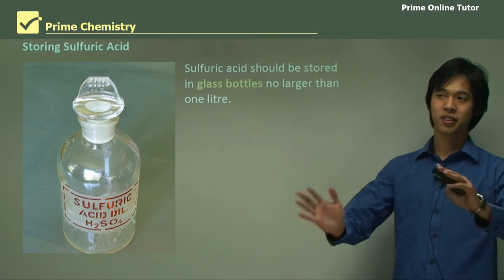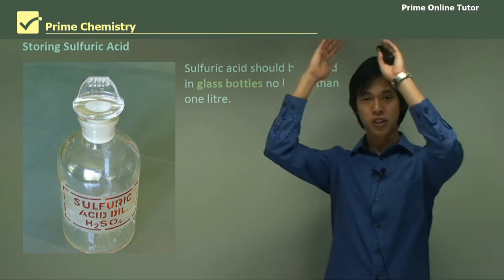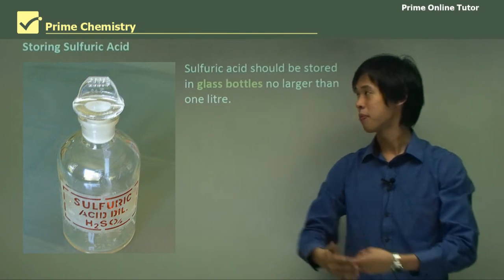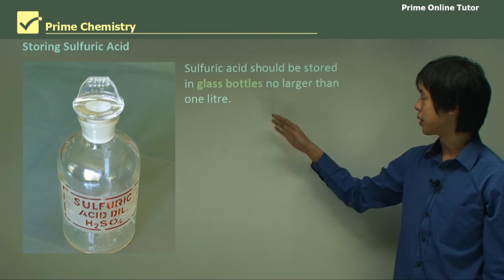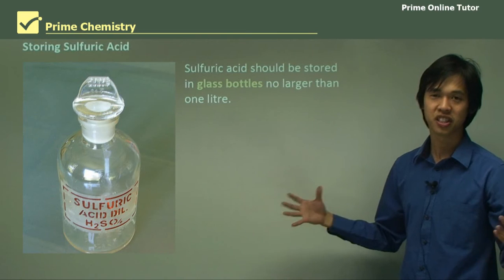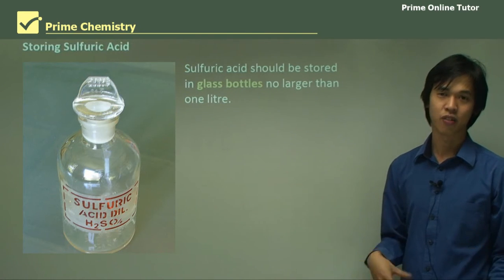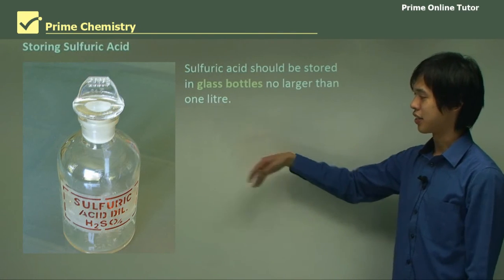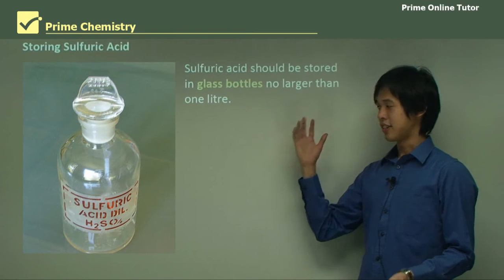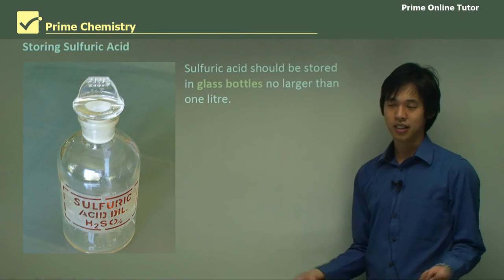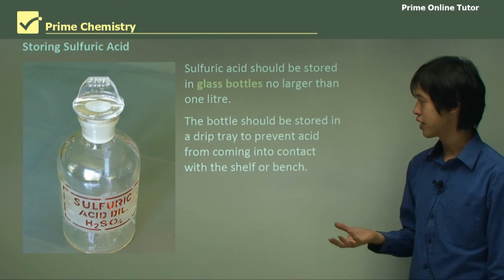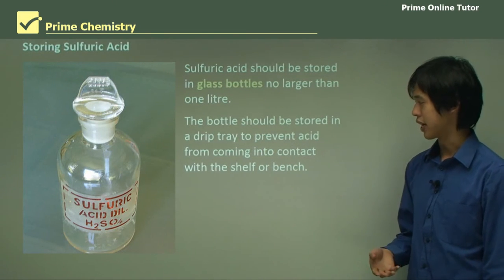Now, how do we store sulfuric acid? Sulfuric acid can be stored in glass bottles, and definitely no larger than one litre. You don't want a huge container of sulfuric acid just sitting around, because that's a recipe for disaster. Glass bottles are very safe — glass is a strong substance — and no bigger than a litre. The bottle should also be stored in a drip tray to prevent acid from coming into contact with the shelf or bench.